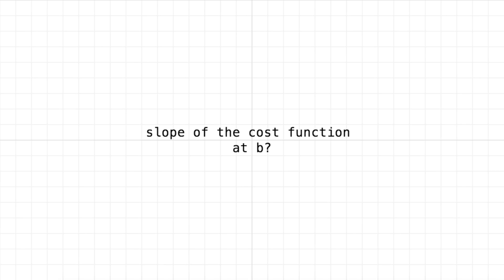So how do we get a function that gives us the slope of the cost function at a specific value of b? Well we're going to have to use some calculus and in particular it's called the derivative so we're going to take the derivative of the cost function with respect to b. All that means is we're going to get a function of the slope of the cost function at specific values of b.